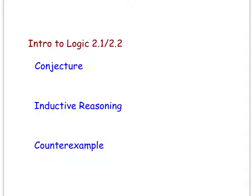The first vocab word we're going to talk about is conjecture. A conjecture is an educated guess based on the known information. Please copy this definition onto your note sheet.